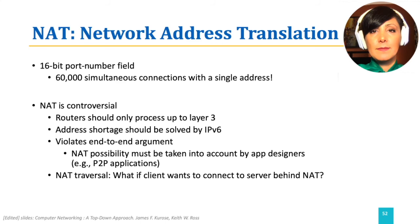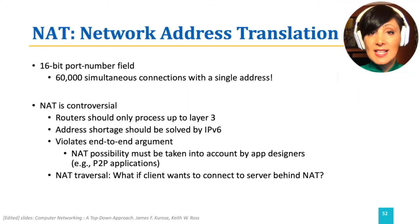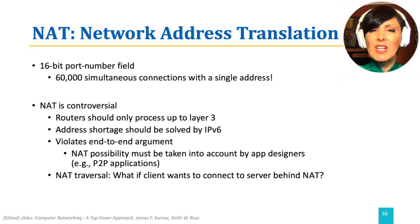However, NAT is controversial for several reasons. First, routers usually process up to layer 3, but NAT brings layer 4 — the port — into the addressing decision and routing processing. Second, NAT complicates the discoverability of addresses behind the NAT for applications like peer-to-peer. What if a server is behind the NAT? Another argument is that the address range problem of IPv4 could be resolved by using IPv6, and part of the controversy is due to the argument that we should move towards IPv6 instead of using NAT.